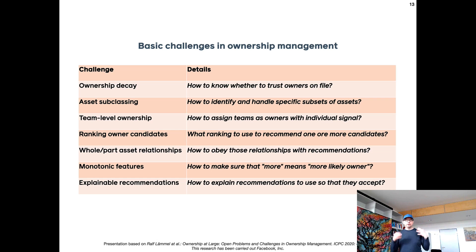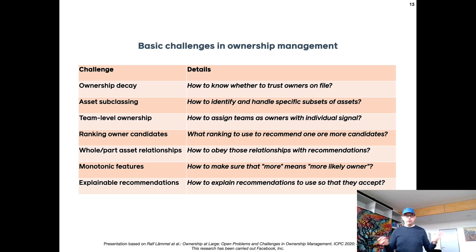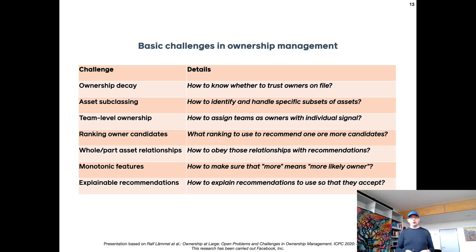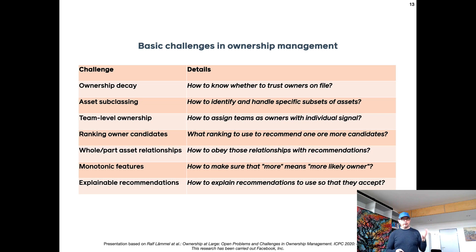Team-level ownership is also a challenge. At Facebook, individuals don't really own assets because you need to be available for alerts and incidents — ownership better goes with the team level. But the problem is that teams don't interact with assets; it's always the individual that interacts with assets. So all the signal about ownership comes from the individual, whereas you really need ownership at the team level. Ultimately, the problem of ownership management boils down to ranking — it's not too hard to define a shortlist of candidates, but the real challenge is ranking those candidates.